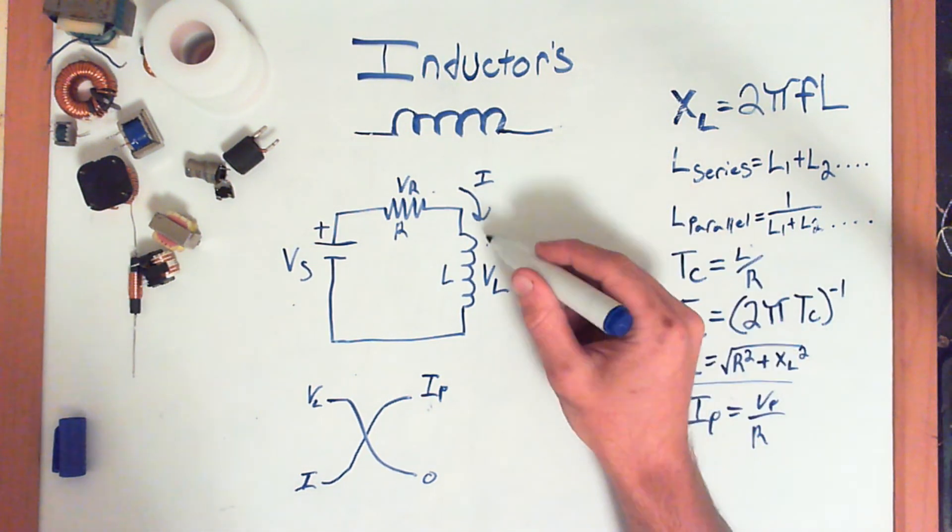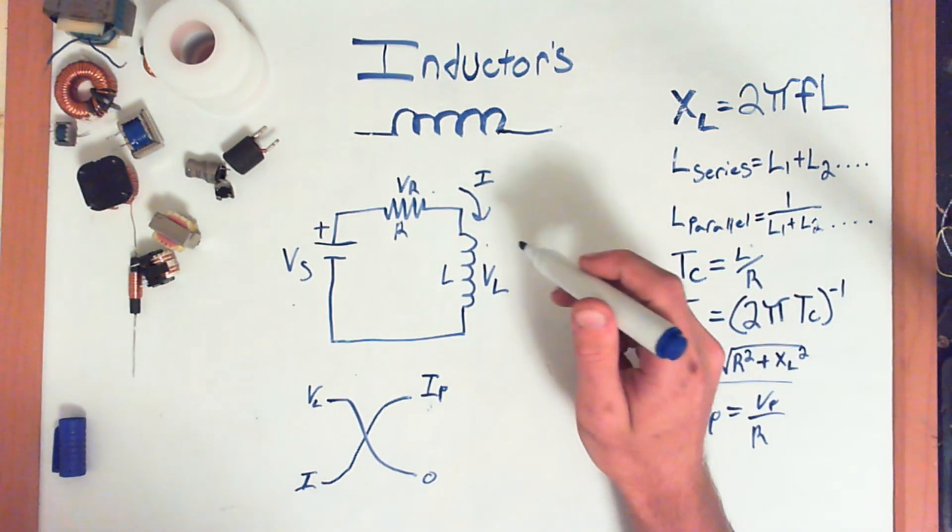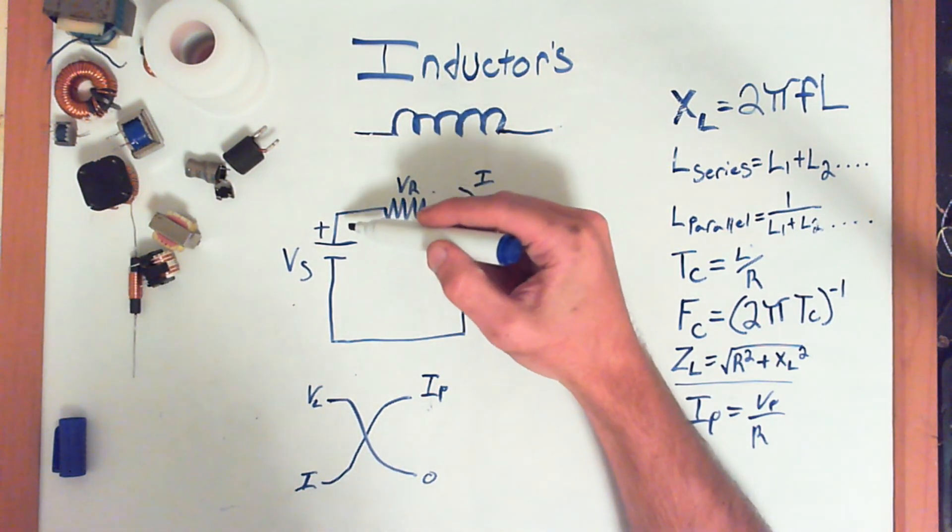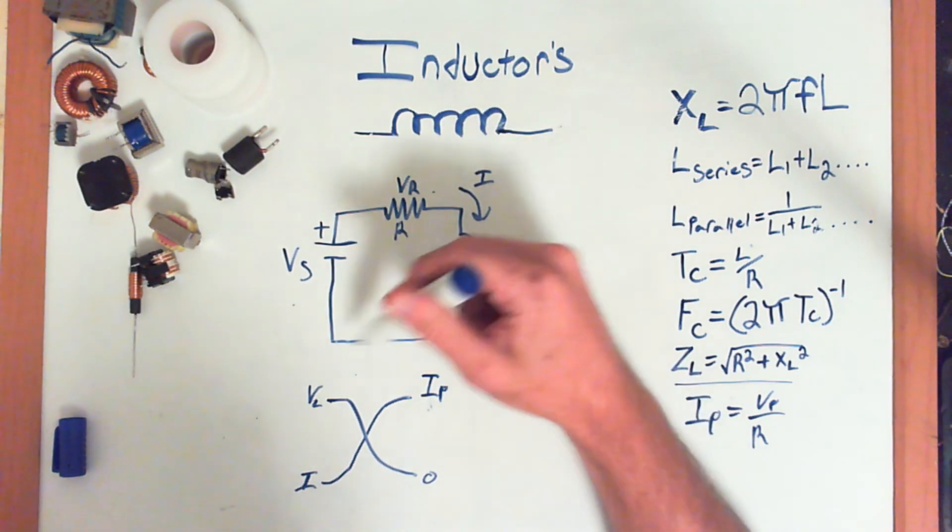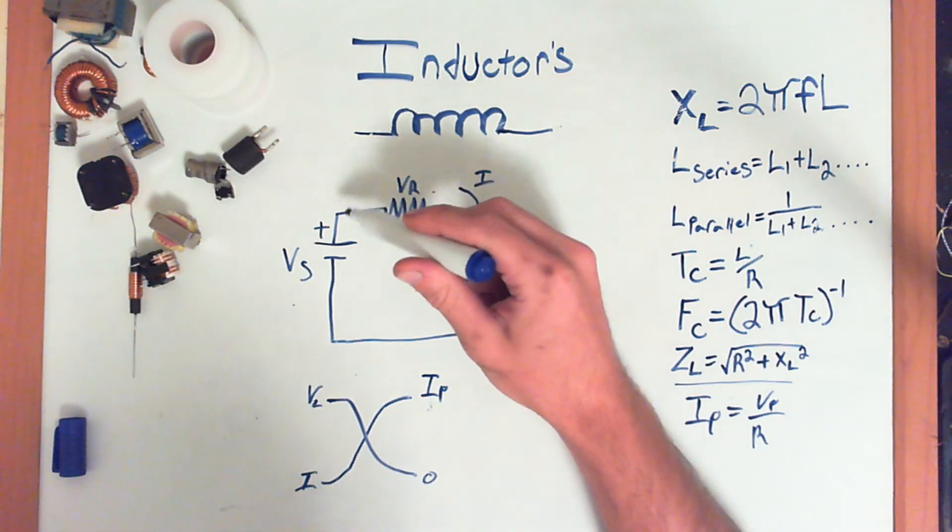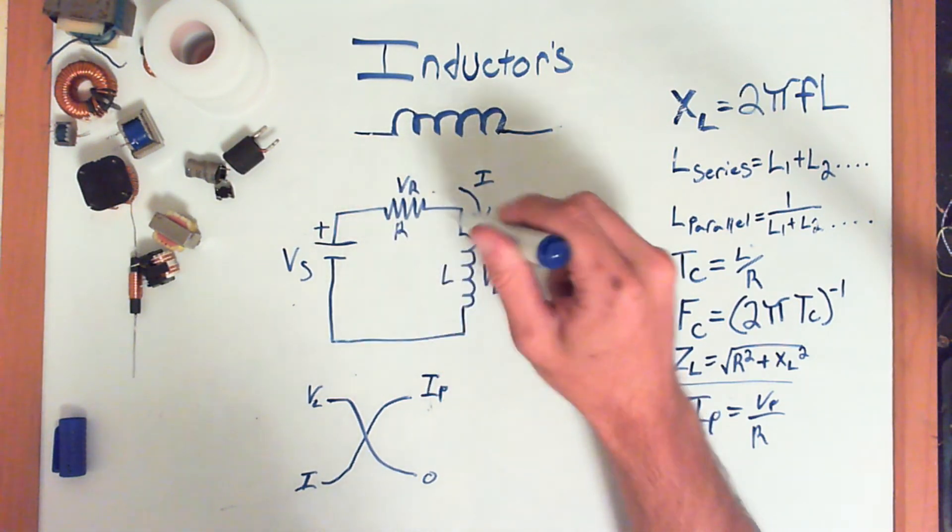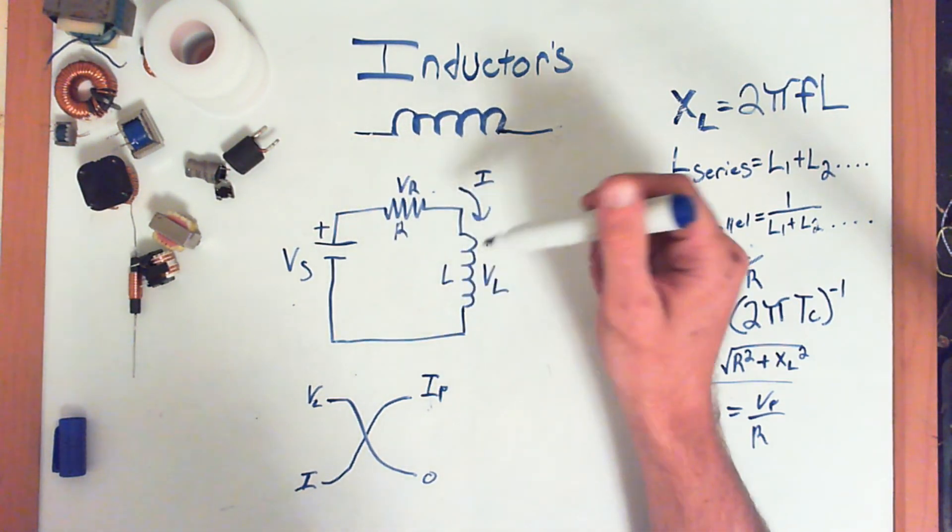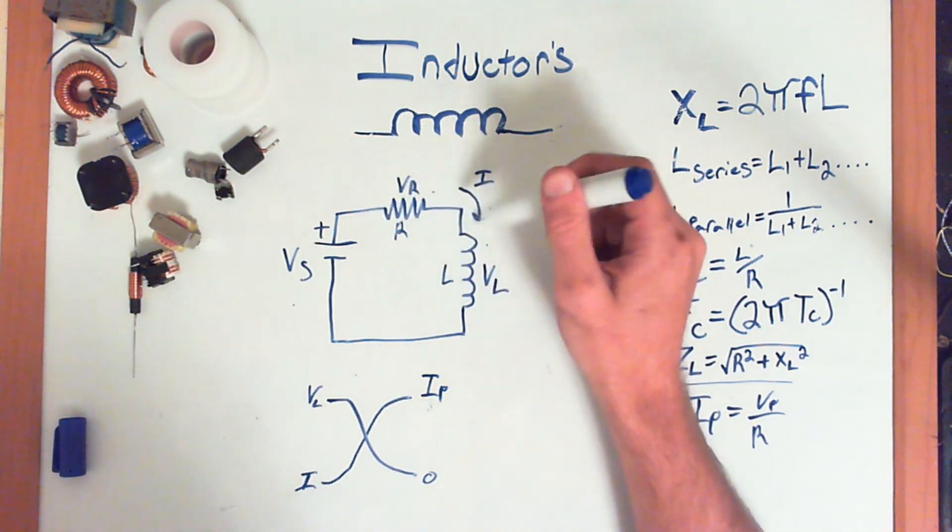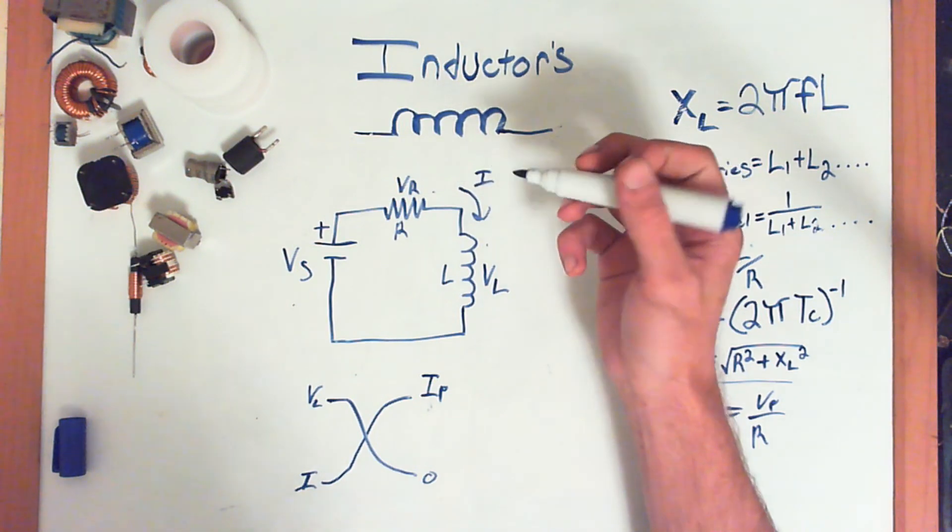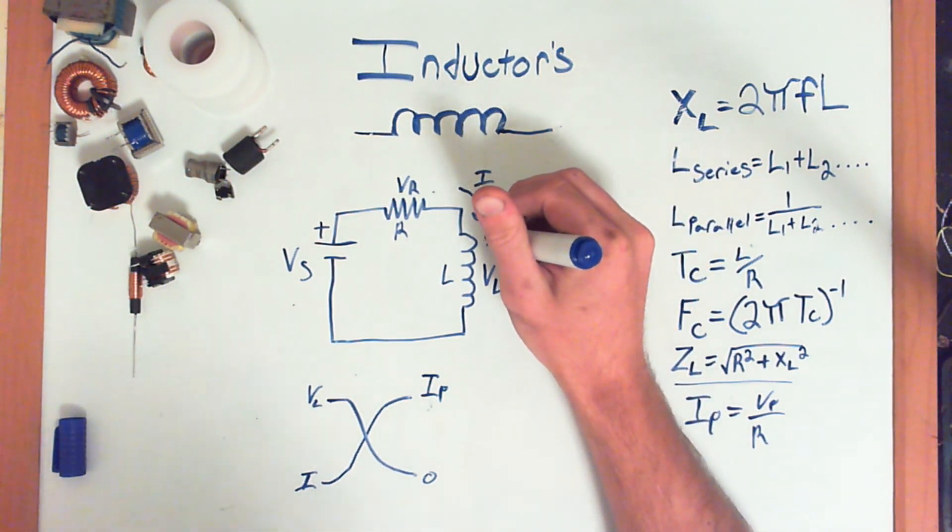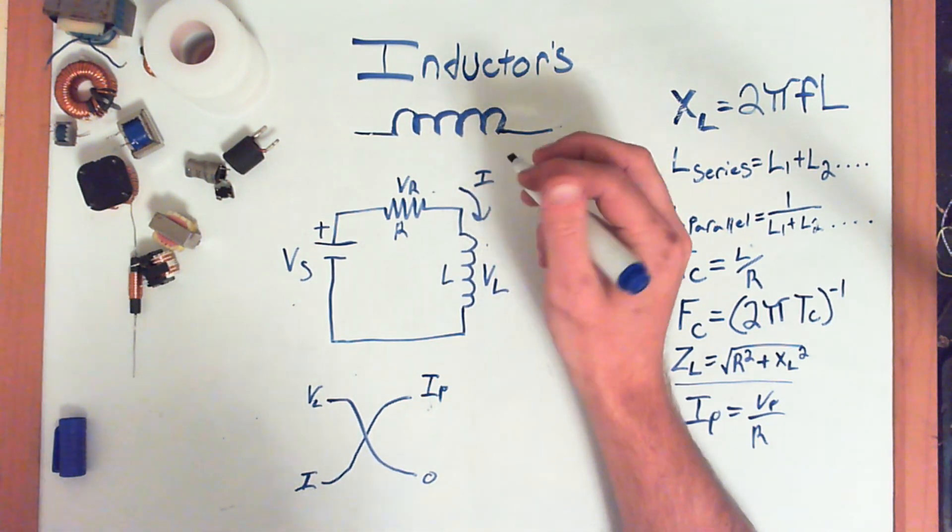An inductor opposes change in current. So, once this circuit reaches its steady state, which is the full current is flowing through the circuit it should be. I'll explain that in a minute. But, once it reaches its steady state, the inductor resists, or, well, I guess it resists the change in current.